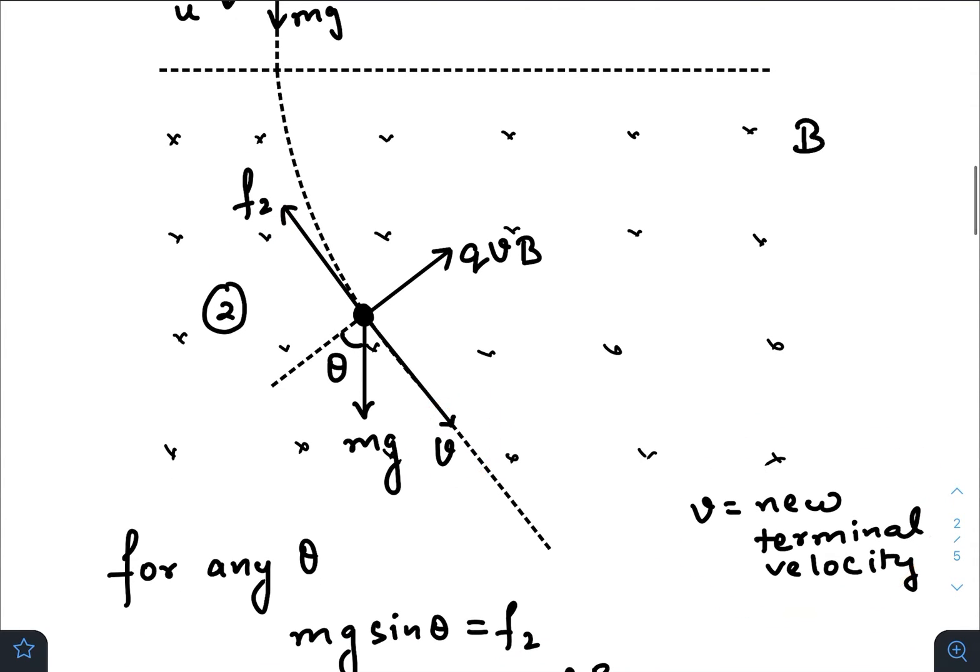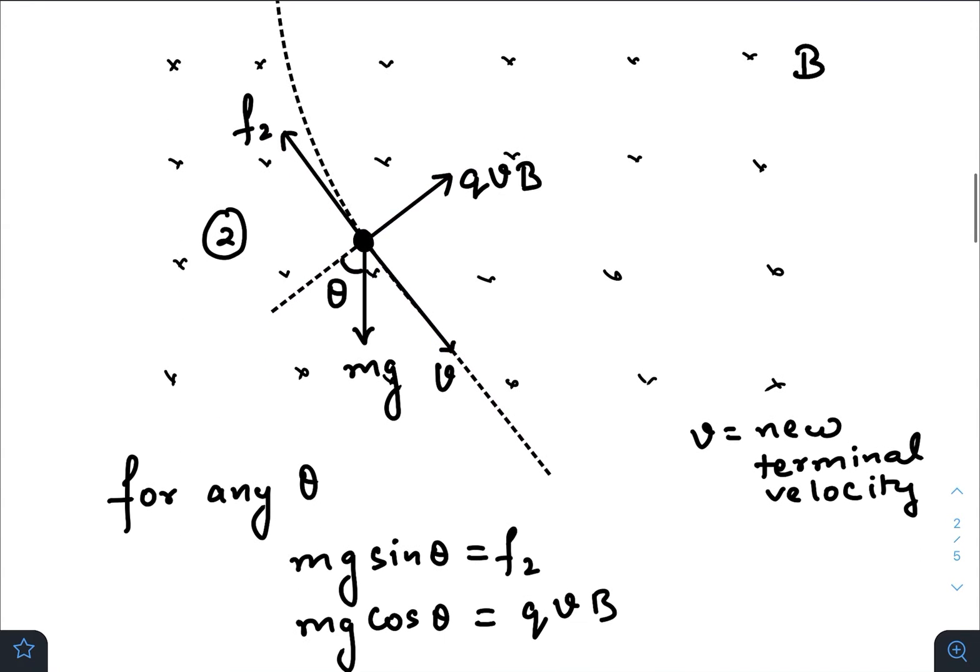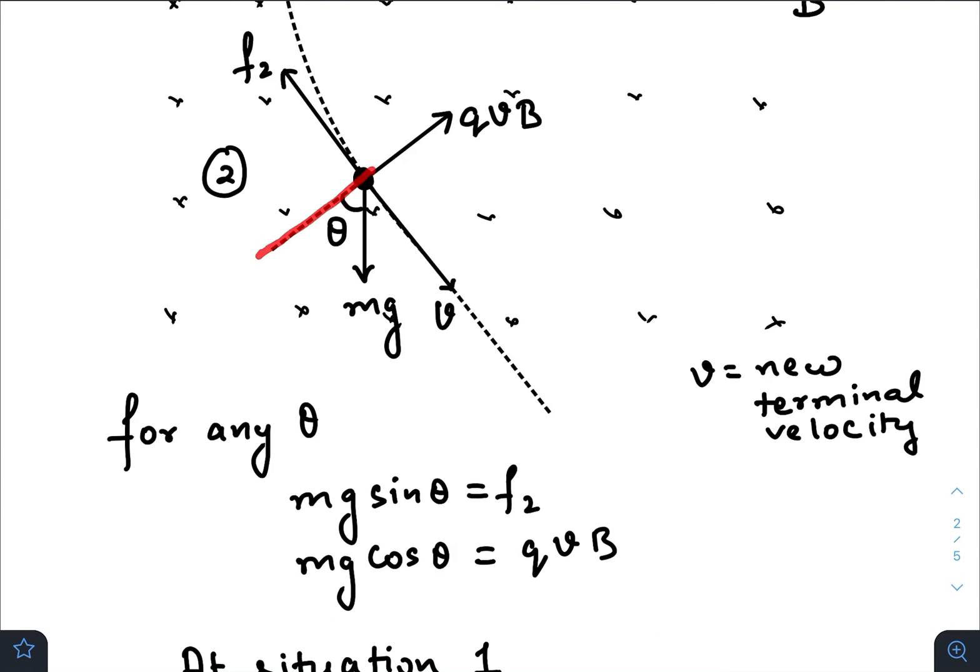Now we will just balance these forces. The net force along this direction and along the tangential direction must be the same. So we can write mg cos theta equals qvB and mg sin theta must equal f2.